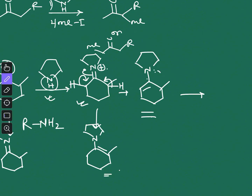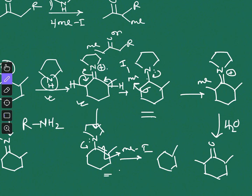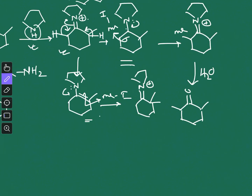If this enamine forms, then the methylation will occur on this side — with methyl iodide, the methyl group will be added here, generating an iminium again. When treated with water, the iminium undergoes hydrolysis and you get this product. But if the reaction goes through the other enamine, the attack will take place from this side, generating a different product. Hydrolysis of that iminium gives this other product. So the question is: which product will form?